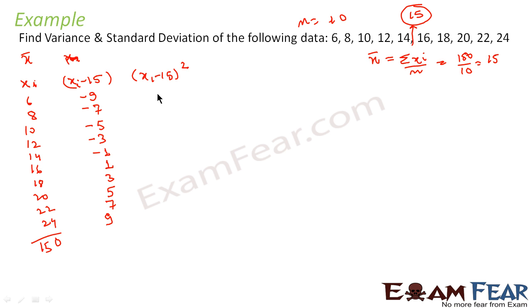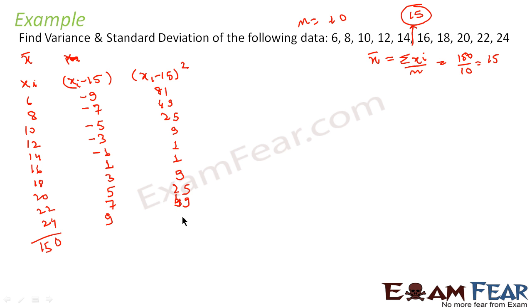Next we square each deviation: (−9)² = 81, (−7)² = 49, (−5)² = 25, (−3)² = 9, (−1)² = 1, 1² = 1, 3² = 9, 5² = 25, 7² = 49, 9² = 81.